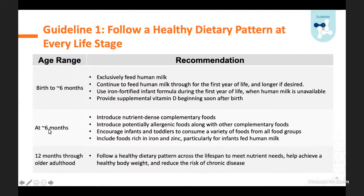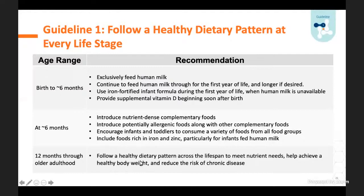At around six months—consistent with AAP—it is important to introduce nutrient-dense complementary foods. This timing opens the opportunity to introduce potentially allergenic foods a little bit earlier. Our evidence was consistent with American Academy of Pediatrics guidelines that there might be some benefit to introducing potentially allergenic foods, such as peanuts, to at-risk children. From food pattern modeling and intake data, it was very clear that there's a significant possibility of gaps in iron and zinc intake, particularly for infants fed human milk. It's important that their complementary foods are rich in iron and zinc.